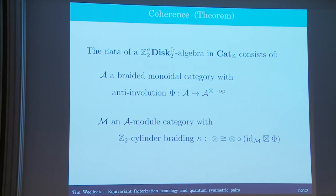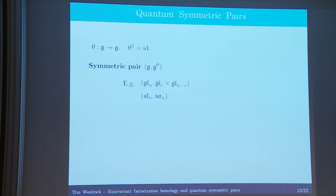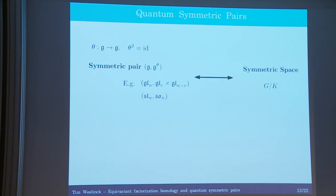The question is where do I get examples of such? This is where the symmetric pairs enter. So what is a symmetric pair? I have some semi-simple Lie algebra g with an involution — a Lie algebra involution — and I'm looking at the sub-Lie algebra of fixed points. This is called a symmetric pair, and classically these were studied as the infinitesimal data corresponding to a symmetric space.